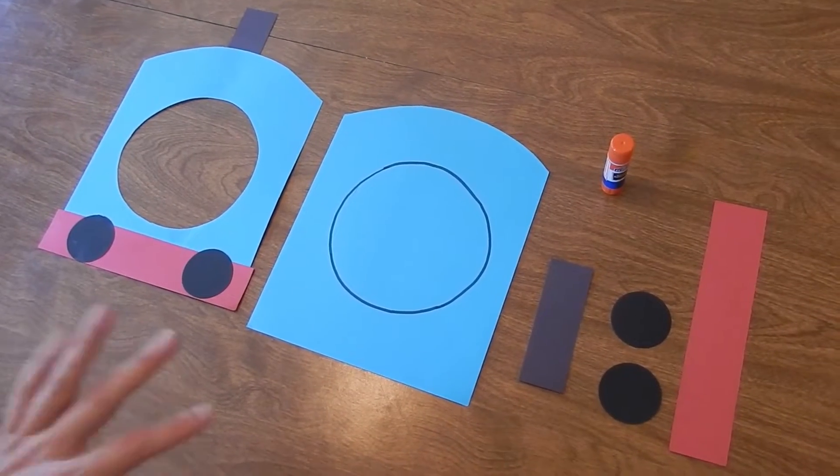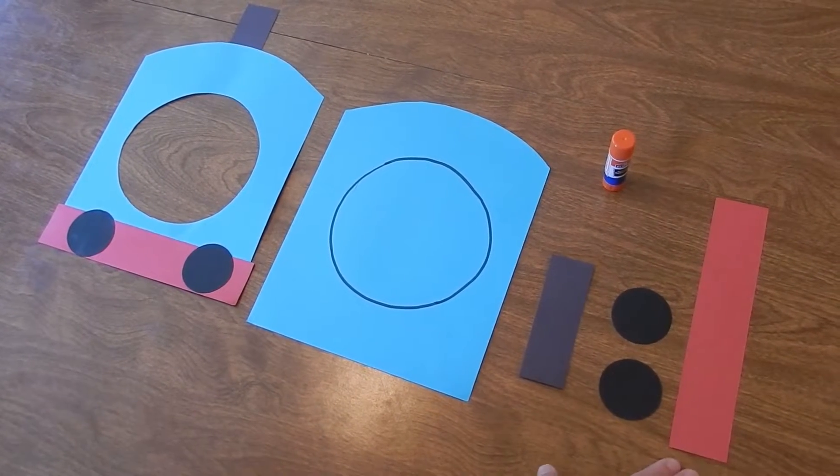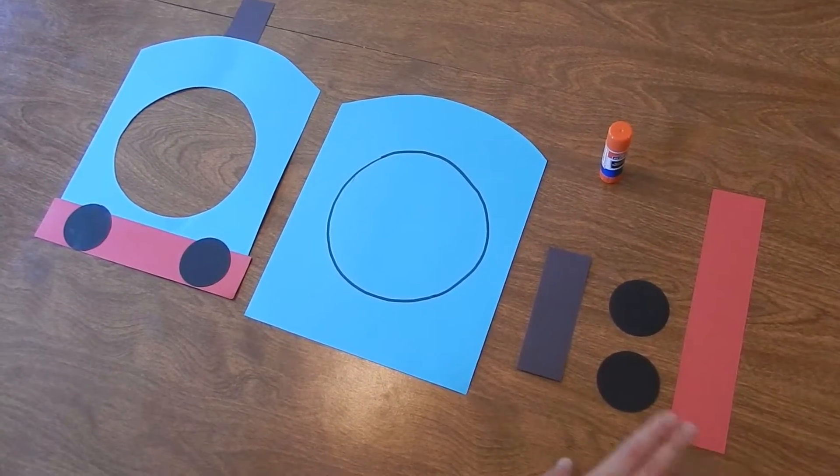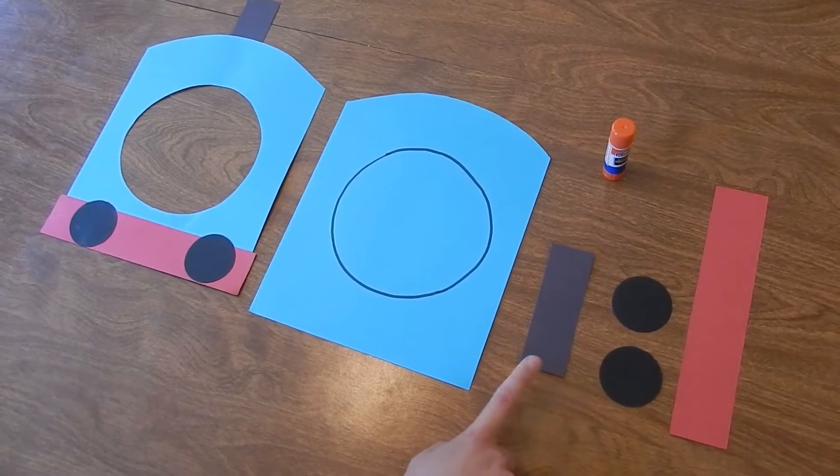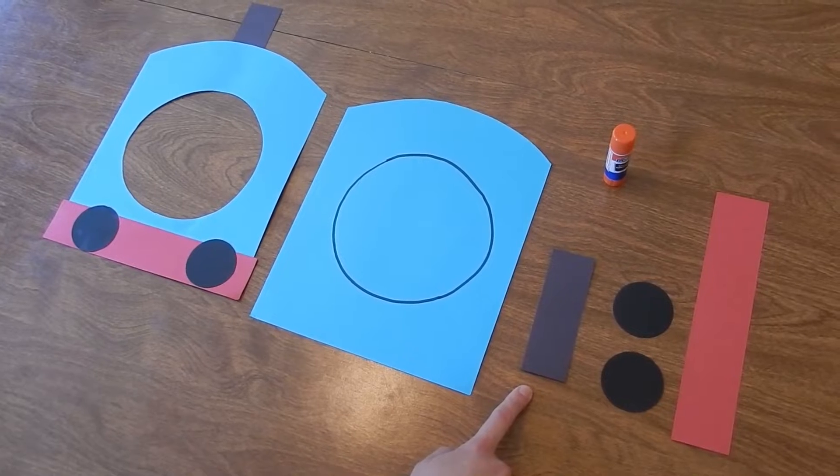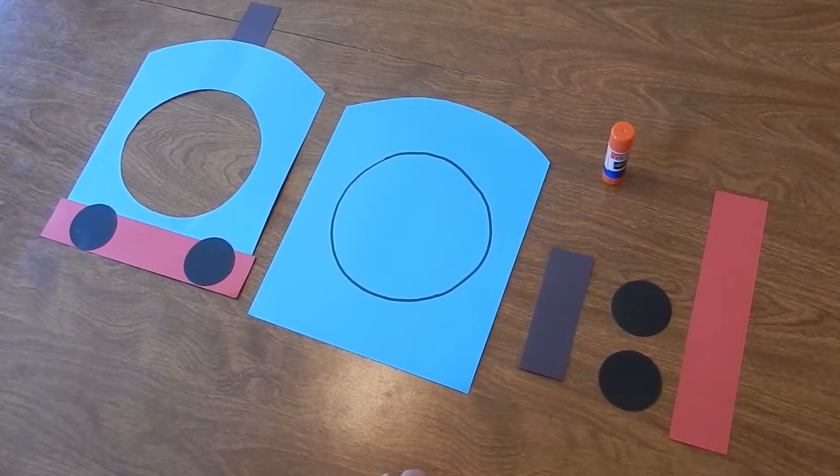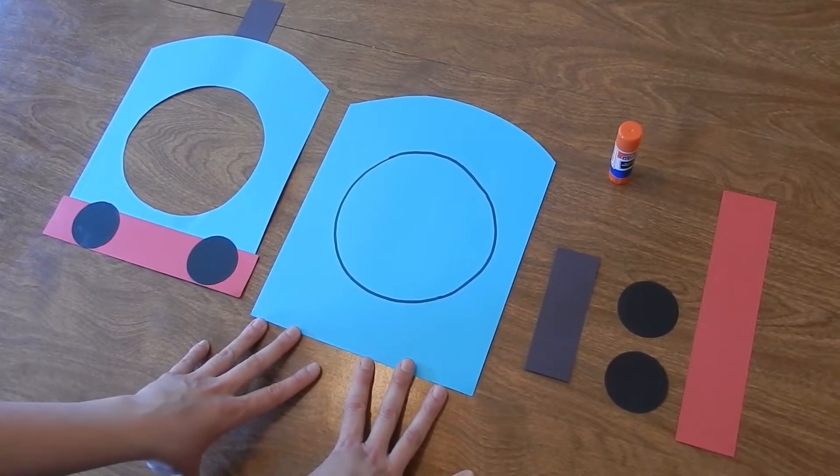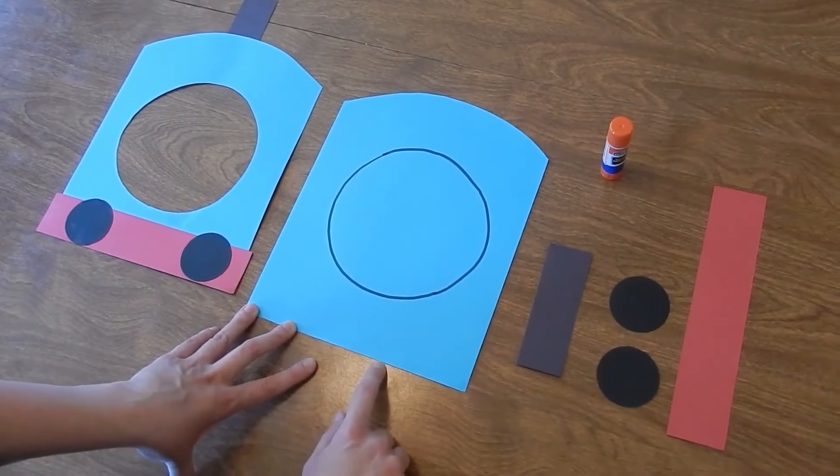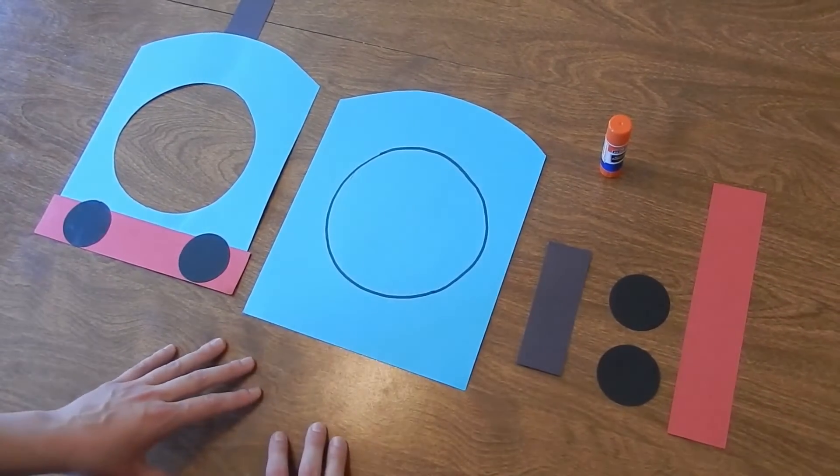So what you're going to need for your Thomas mask are a piece of red construction paper, two circles cut out of black construction paper, another piece of black paper cut about an inch by three inches long, a blue piece of construction paper or cardstock with a circle drawn in the middle and then you're going to cut that circle out, and you'll need a glue stick as well.